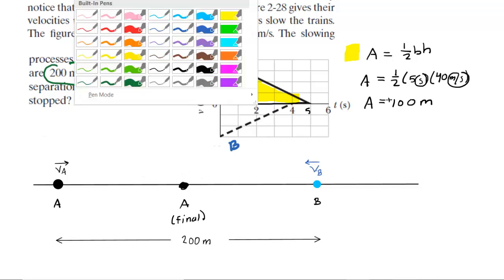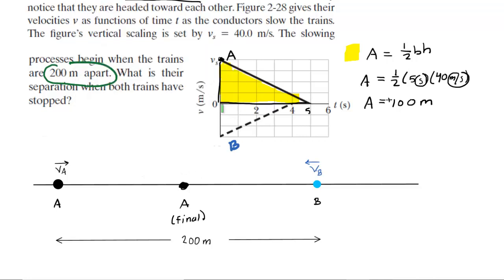Now let's perform a similar area calculation for Train B. We're going to need to get the area underneath the graph or the curve or the straight line in this case for that train we have marked B. We will color it in green, and we'll use the same formula for the area because once again it's a triangle: one-half times the base times the height. Looking carefully, the base of the green triangle is four seconds, so we will have one-half times four seconds.